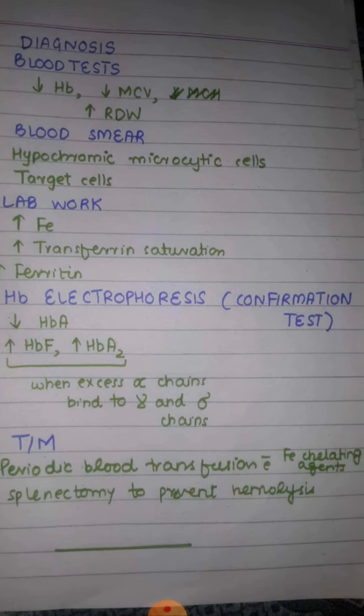Treatment includes periodic blood transfusions with iron chelating agents, and splenectomy is performed to prevent hemolysis. This concludes beta thalassemia. In the next lecture we will cover paroxysmal nocturnal hemoglobinuria. Thank you.